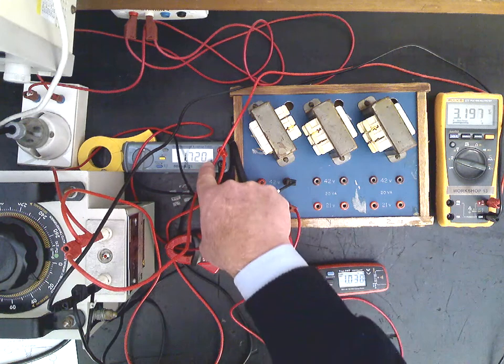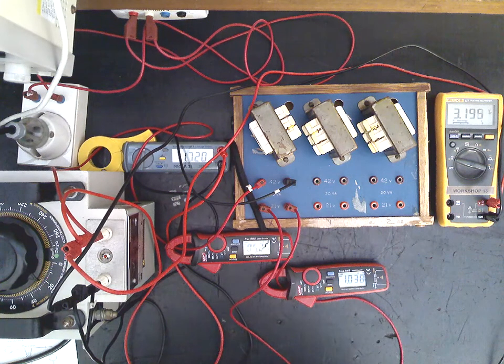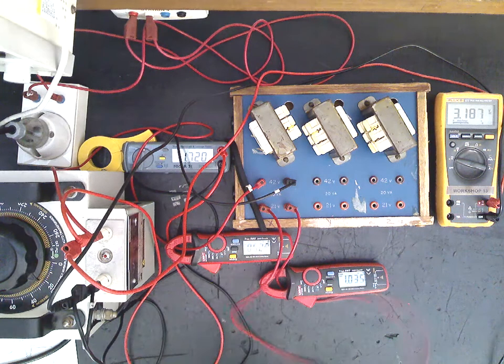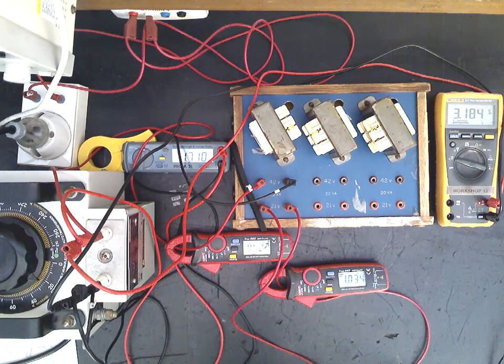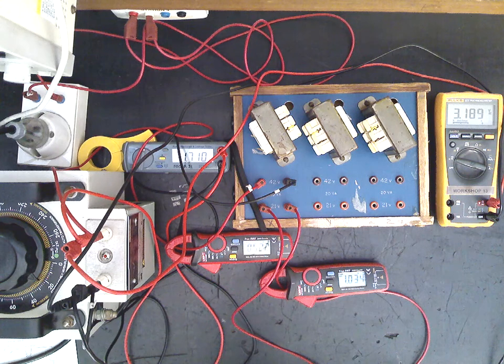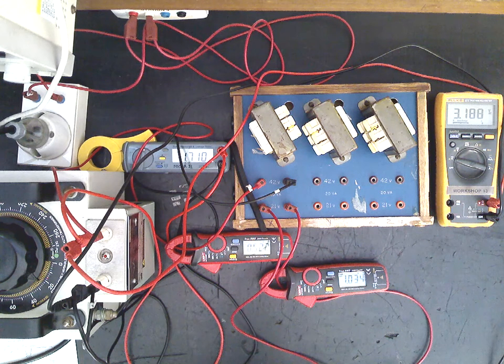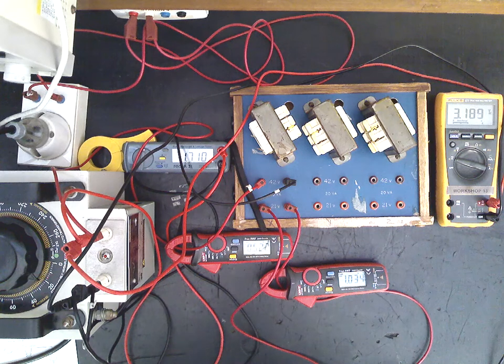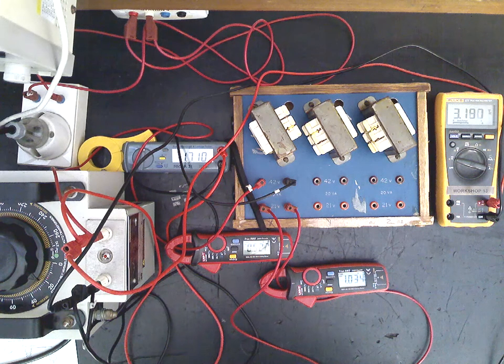And the power loss up here in the primary on the short circuit test is 1.7 watts. So it's the sum of the iron loss power and the copper loss power that adds up to the total losses in the transformer when it's under full load. And we can calculate that efficiency of the output divided by the input.